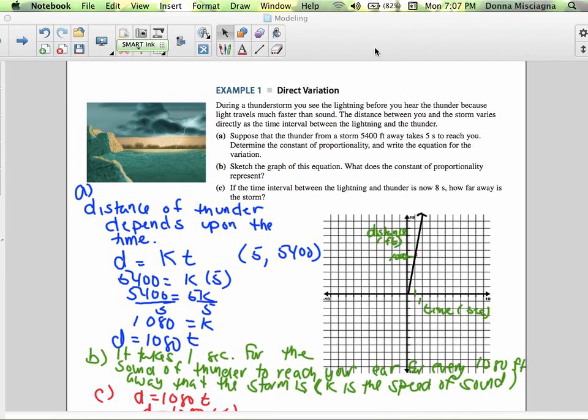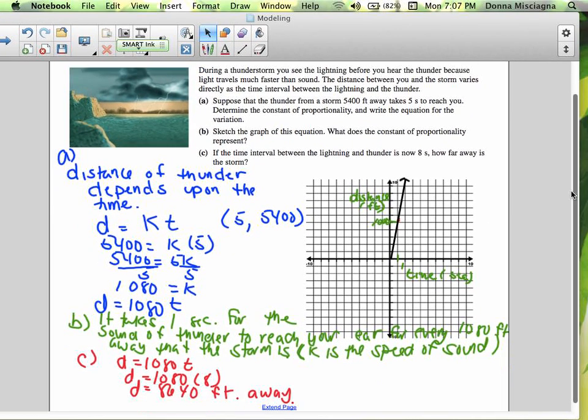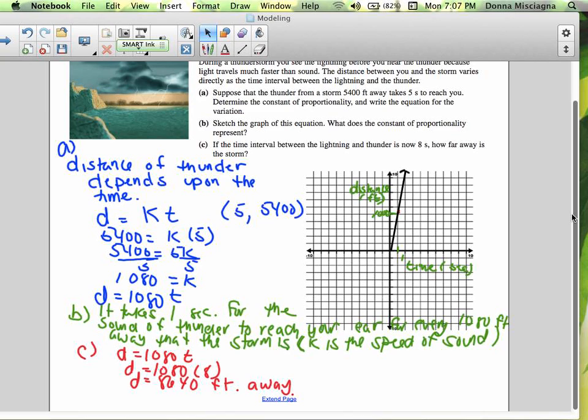Before we look at our next type of variation, let's look back at our problem on thunder there. And maybe just a slightly more succinct way to describe what K is.